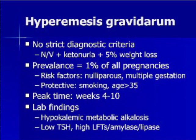Hyperemesis gravidarum, or HG, is a clinical syndrome with no single agreed-upon definition. A working definition accepted by most OBs is nausea and vomiting with ketonuria and weight loss. It occurs in 1% of all pregnancies. Risk factors for HG include nulliparity and multiple gestation. Interestingly, older age and smoking are protective, but this should not be an indication to encourage pregnant patients to start smoking to avoid HG. The peak time of onset is at weeks 4 to 10 of pregnancy.